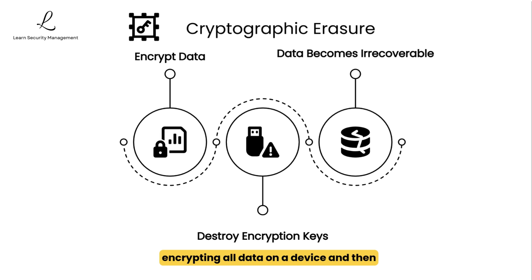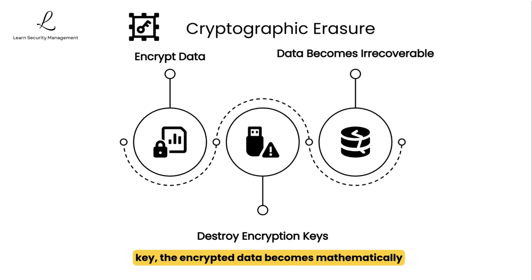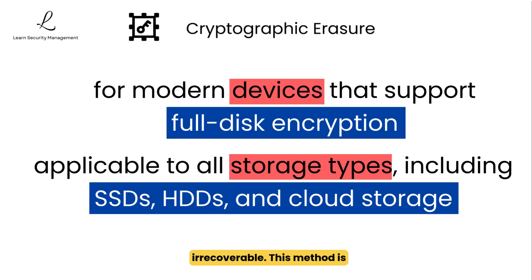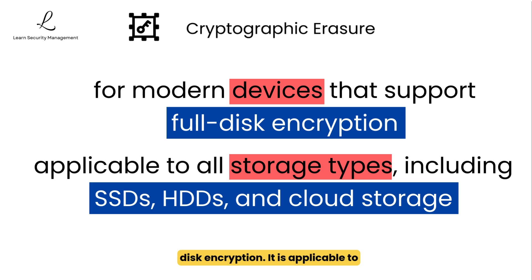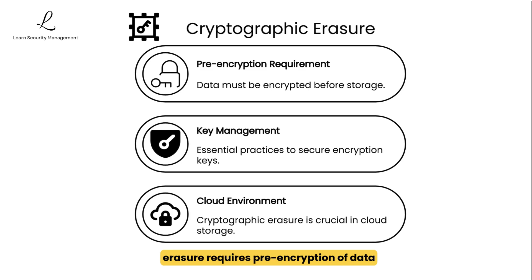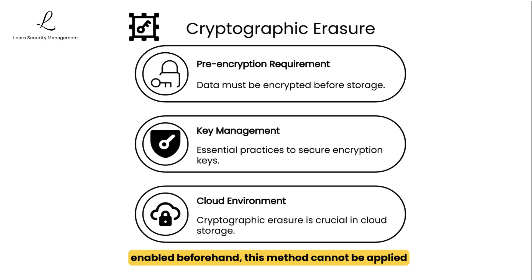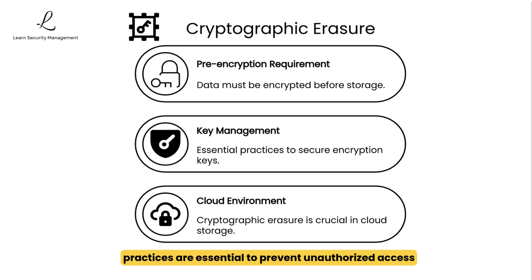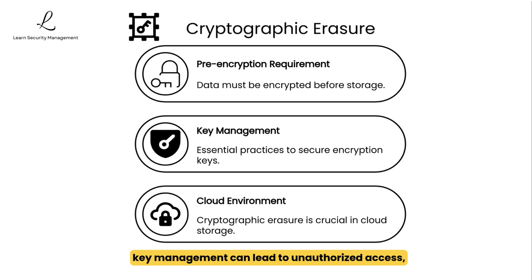Cryptographic erasure involves encrypting all data on a device and then securely destroying the encryption keys. Without the key, the encrypted data becomes mathematically irrecoverable. This method is particularly effective for modern devices that support full disk encryption and is applicable to all storage types including SSDs, HDDs, and cloud storage. Cryptographic erasure requires pre-encryption of data before storage — if encryption was not enabled beforehand, this method cannot be applied retroactively. Proper key management practices are essential to prevent unauthorized access to encryption keys, as weak or compromised key management can undermine the effectiveness of cryptographic erasure.